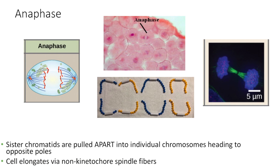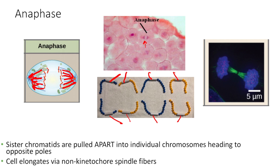In anaphase — which starts with A, helping to remember that the sisters are pulled apart — the spindle fibers contract and pull the genetic information toward opposite poles. Each pair of sister chromatids is split apart, with individual chromosomes heading toward opposite ends, and the cell continues to elongate. On a whitefish blastula slide, you'll see a gap forming between two groups of genetic material where they were previously together in the middle.